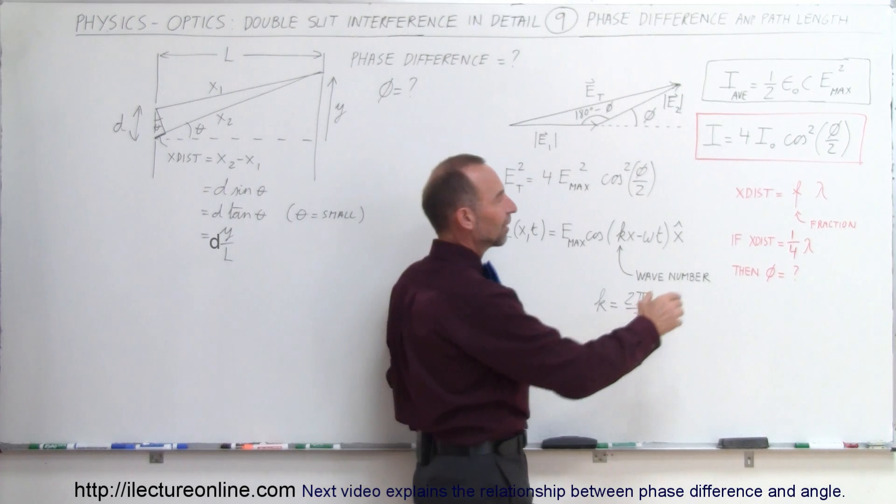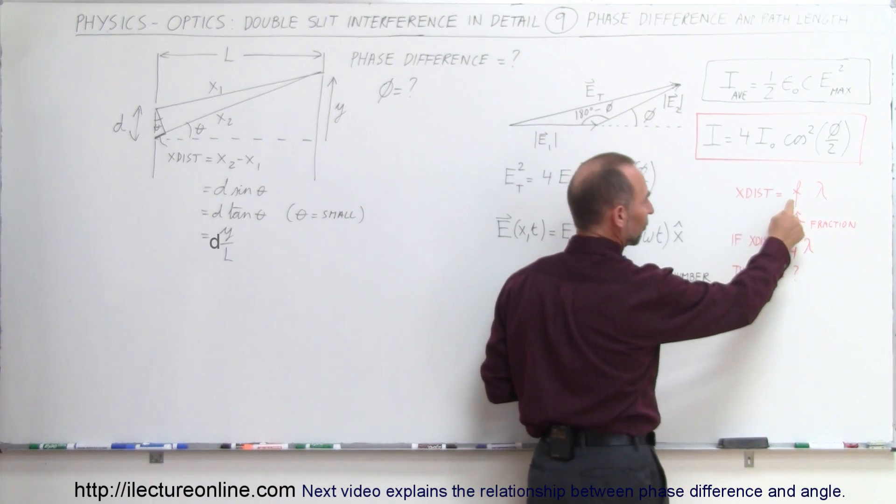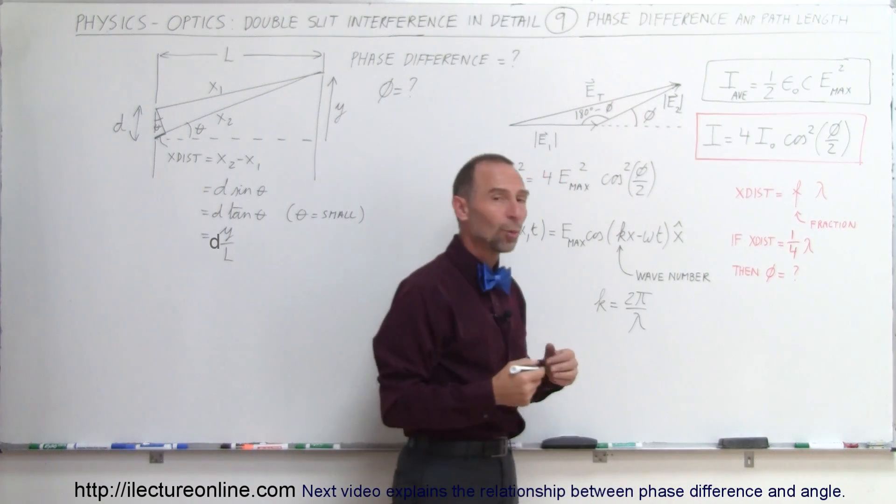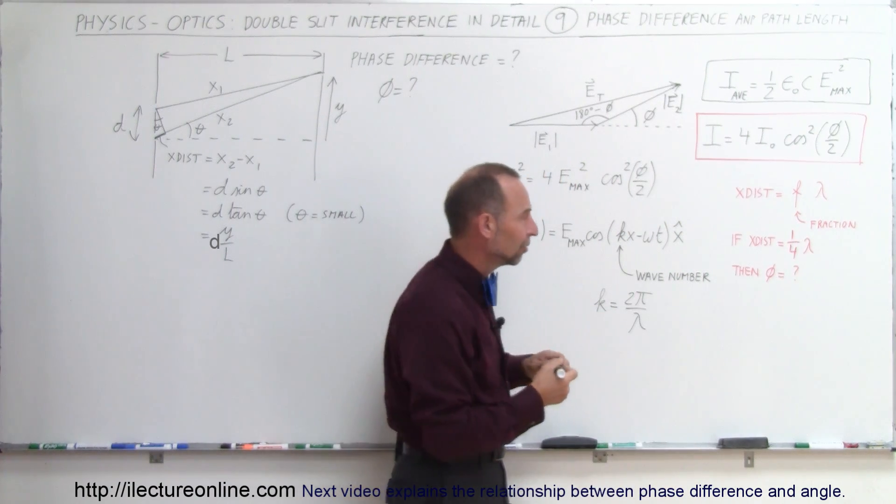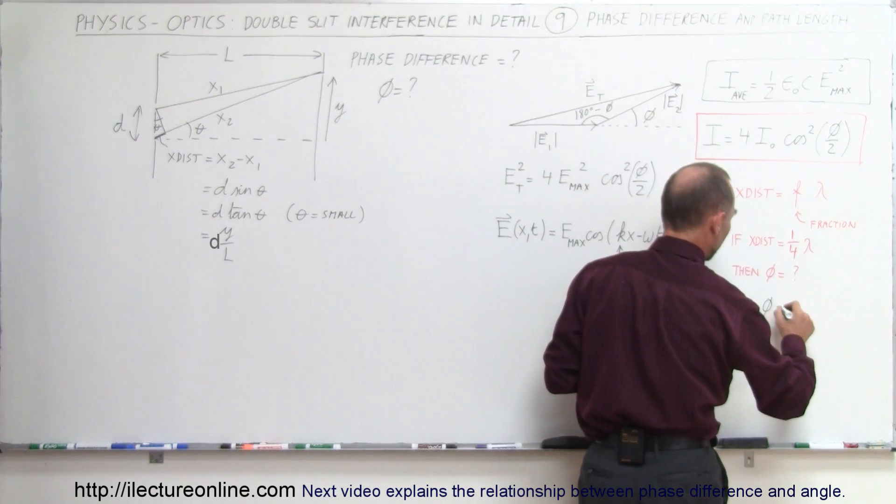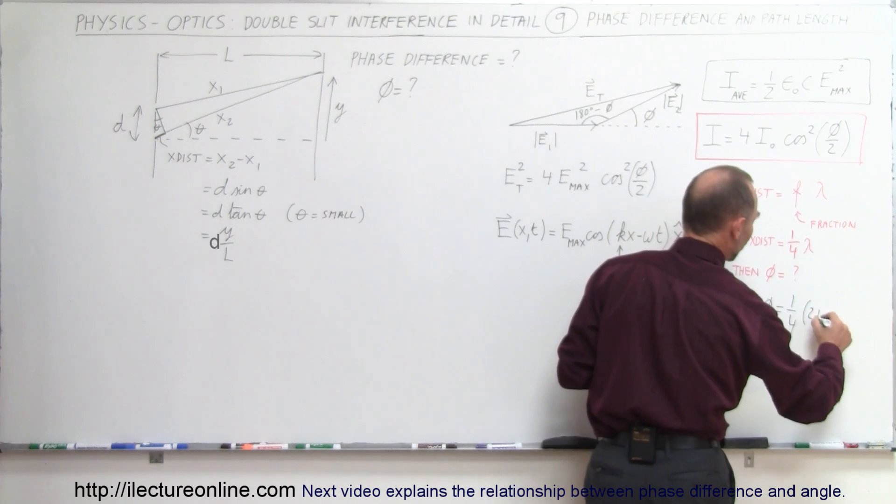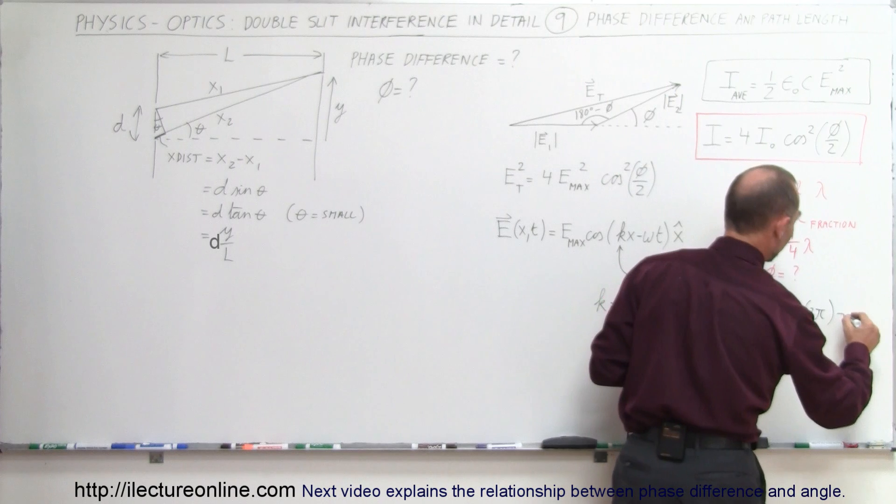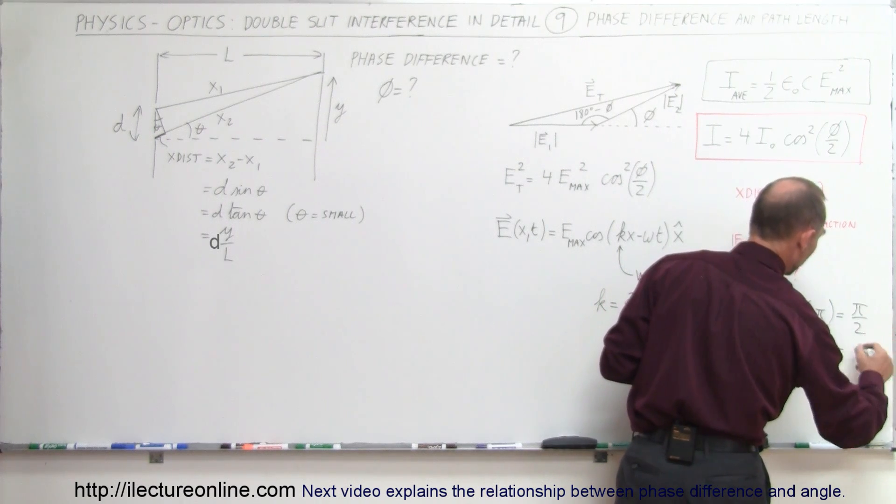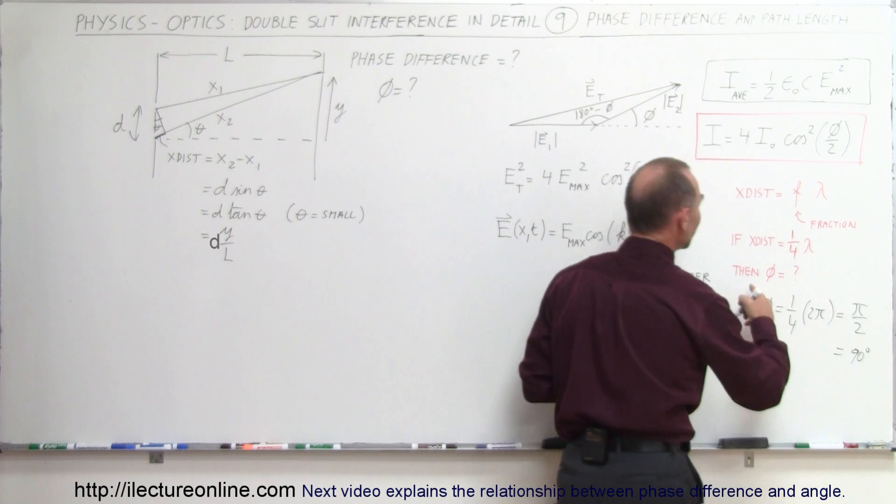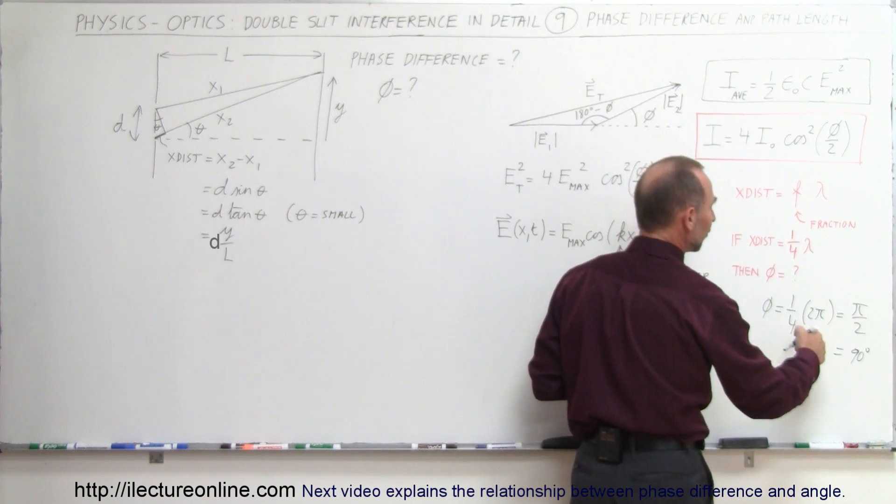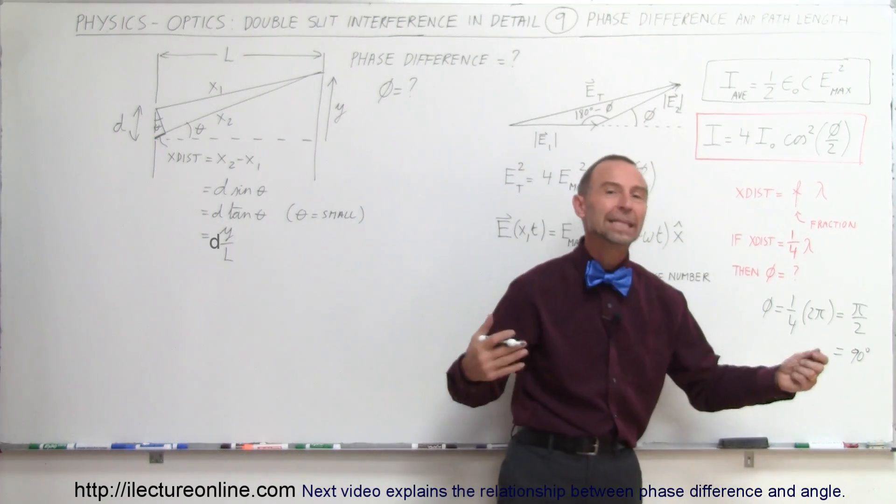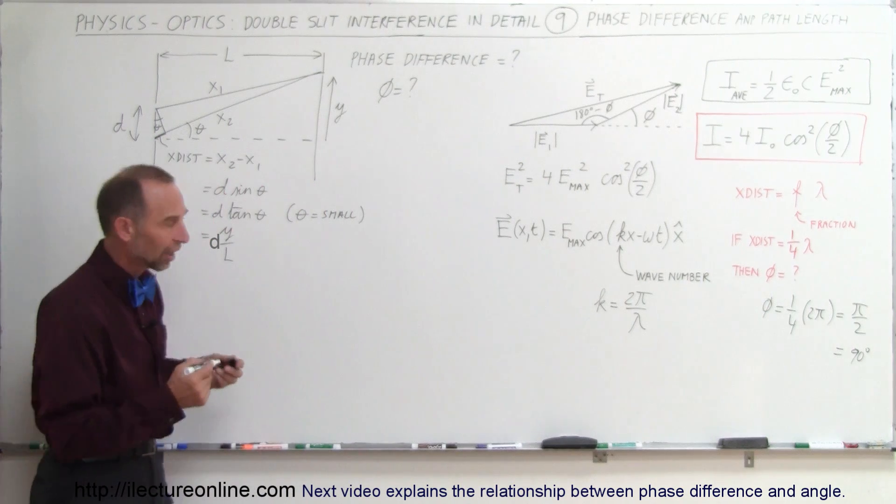If the extra distance traveled is equal to some fraction of a wavelength—let's say in this example, if the fraction is one quarter of a wavelength—what is the phase difference? Well, the phase difference can be calculated by taking the same fraction and multiplying it times 2π, which is a complete phase or 360 degrees. So one quarter of 2π equals π divided by 2, which equals 90 degrees. In this case, if the extra distance travels a quarter of a wavelength, the phase difference would be π over 2 radians or 90 degrees.